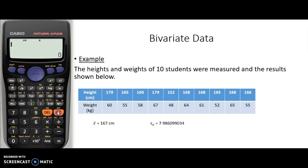We do something similar for our weights. There's our mean for our weights, so 5 equals. There's our mean of our weights, 58.5 kilograms.